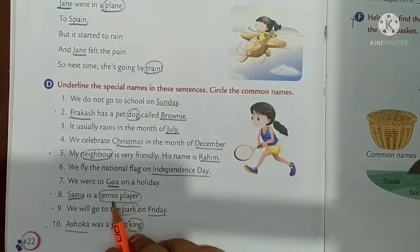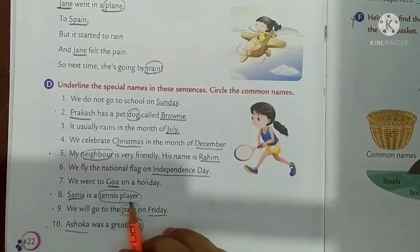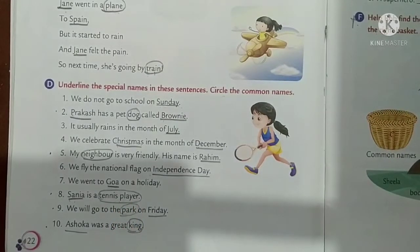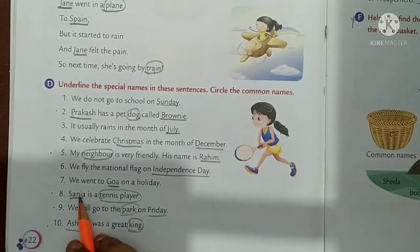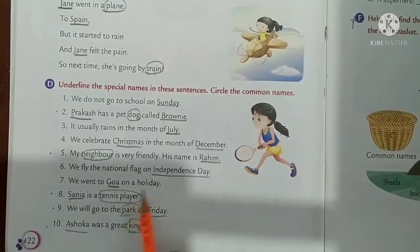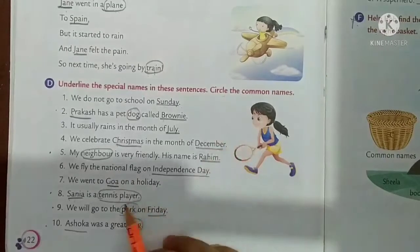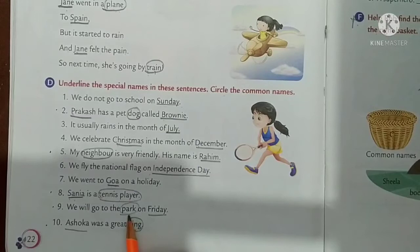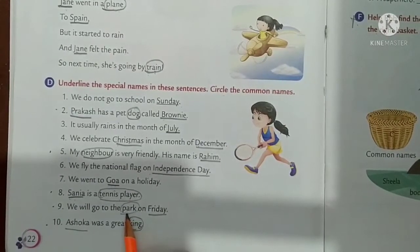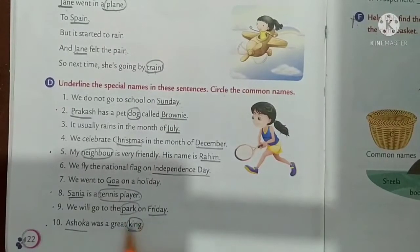Sanya is a tennis player. Tennis player is a common name, but Sanya is a particular person's name — S capital, special name. We will go to the park on Friday. Park is a common name. Friday is a special name.